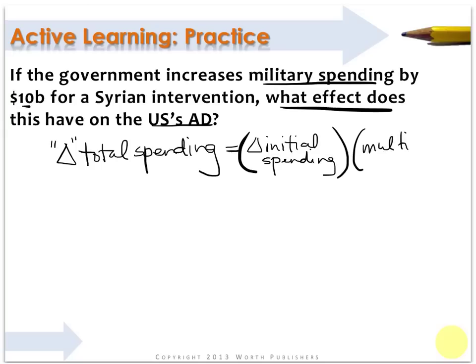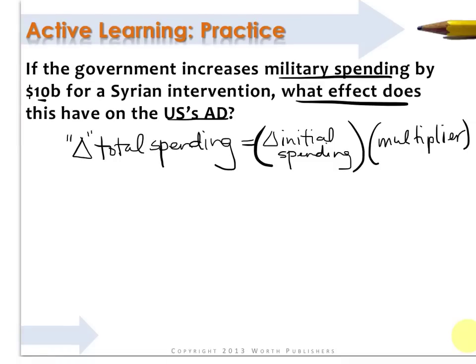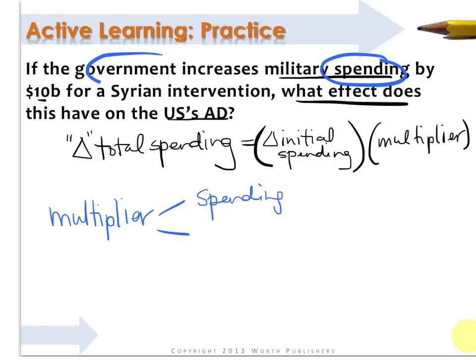So which multiplier are we looking at here? There are several multipliers. We are looking at the spending multiplier, which is the one we're going to use here because we've got government military spending.